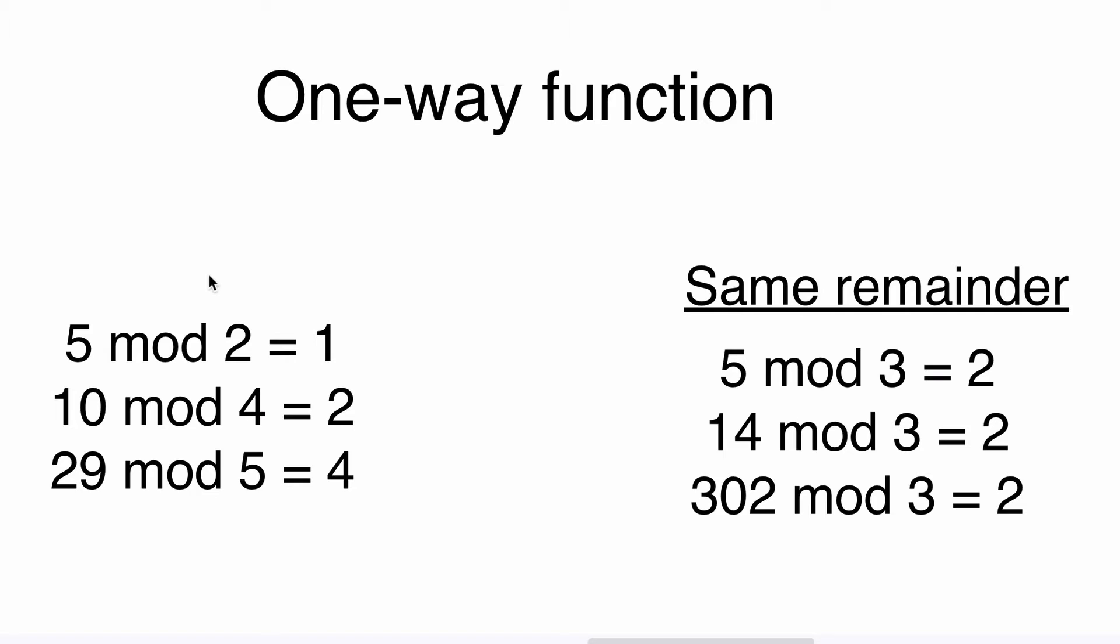For example, if you apply the mod operation to two numbers five and two, you'll get one. Because five is equal to two plus two plus one, the remainder of division of five by two is one.